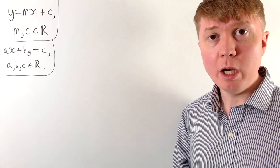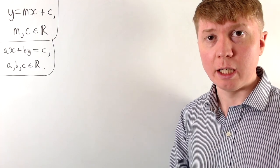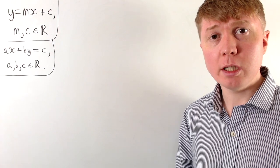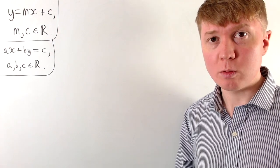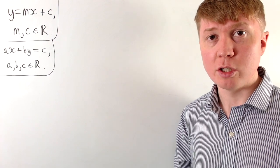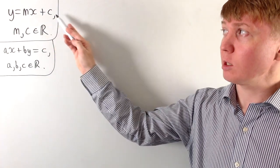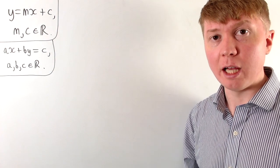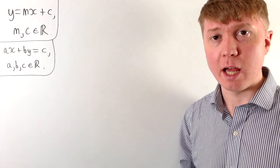We're going to look at a neat way of writing the equation of a straight line in the complex plane. If we first think about the Cartesian plane, or xy plane, the most common way of writing the equation of a straight line is y equals mx plus c, where m is the gradient of your line and c is its y-intercept.